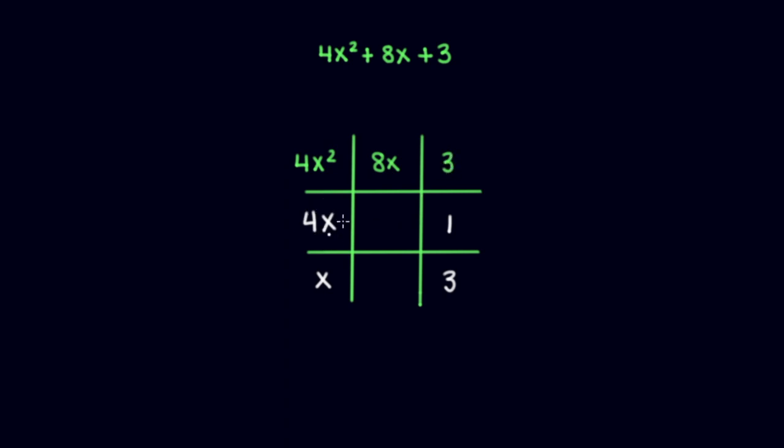What we can do is we can multiply the left middle value by the bottom right value and place it in our middle box, and we can multiply the x and 1 and place it in the bottom box.